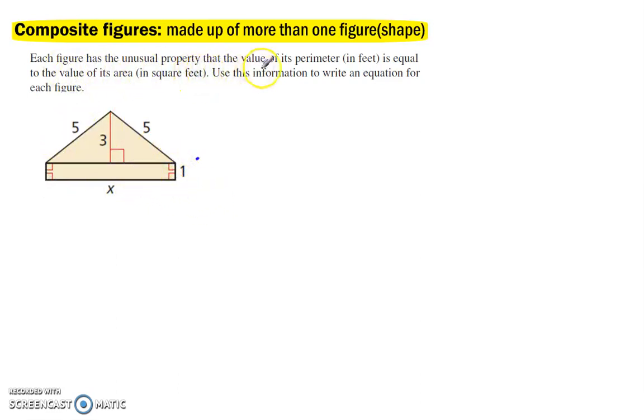Each figure has the unusual property that its perimeter in feet is equal to the value of its area in square feet. So we can say p is equal to a. So the perimeter again is adding up around the outside. So the perimeter is 5 plus 5 plus 1 plus x plus 1, is equal to the area of a rectangle, is 1 times x.